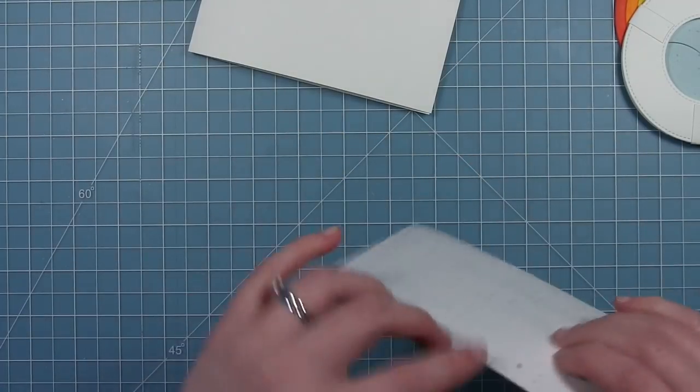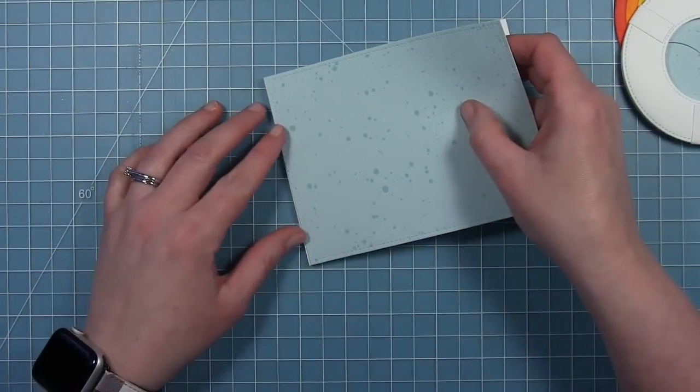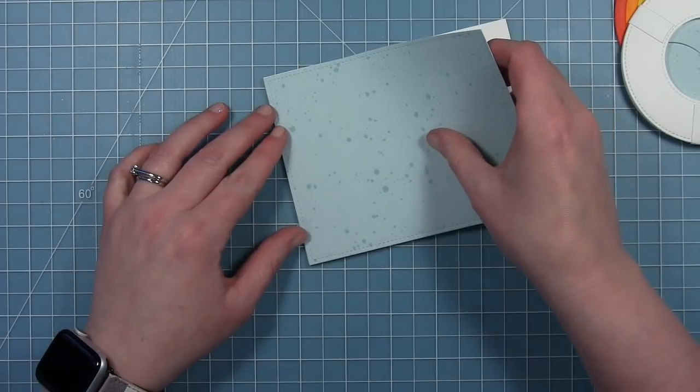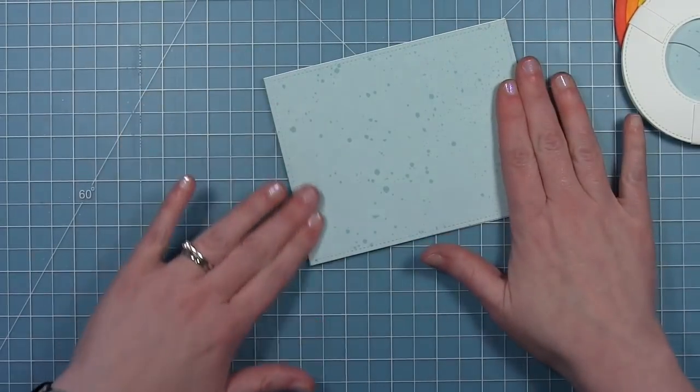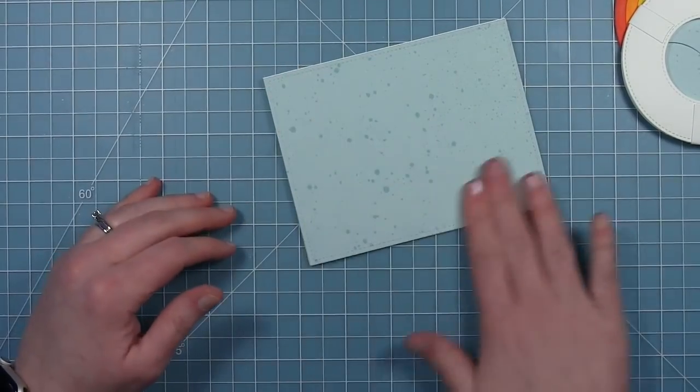So now I'm going to work on my card base. I have the same teal colored Spiffy Speckles paper and I've cut it out with the largest stitched rectangle so that it fits the whole front of my card. And I'm just adhering that down to a card base.